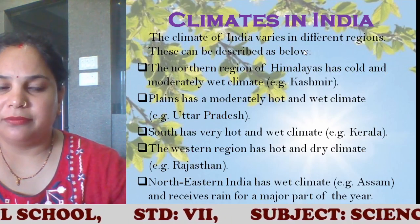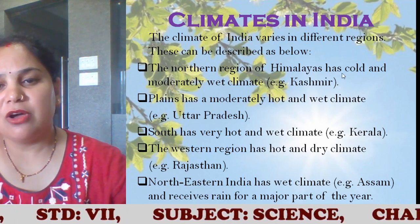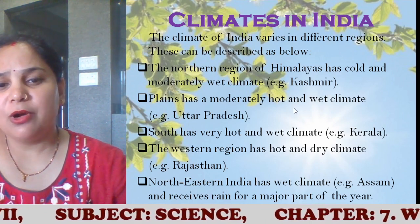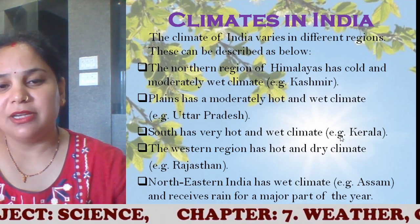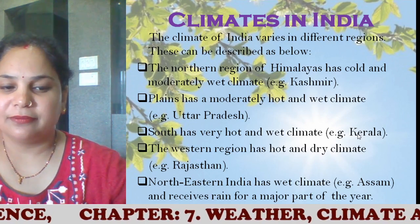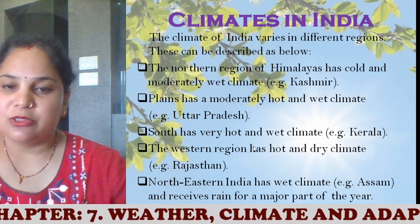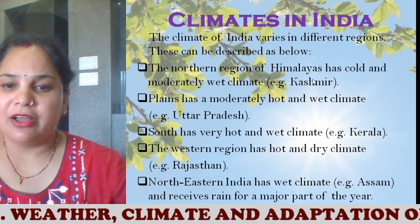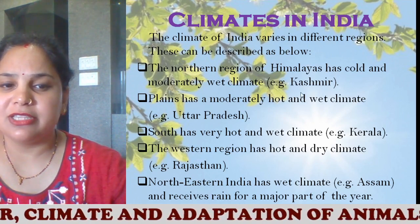Let's see the climate of India. The climate of India varies across different regions and can be described as beautiful. The northern region has a cold and moderately wet climate — for example, Kashmir. The plains have a moderately hot and wet climate — for example, Uttar Pradesh. The south has a very hot and wet climate — for example, Kerala. The western region has a hot and dry climate — for example, Rajasthan. Northeastern India has a wet climate — for example, Assam, which receives rainfall for a major part of the year. Different parts of India have different climates, which is why India's diverse climate is an attraction for foreigners.